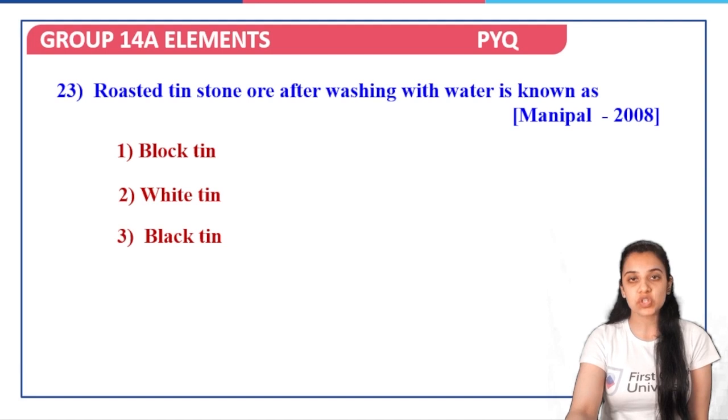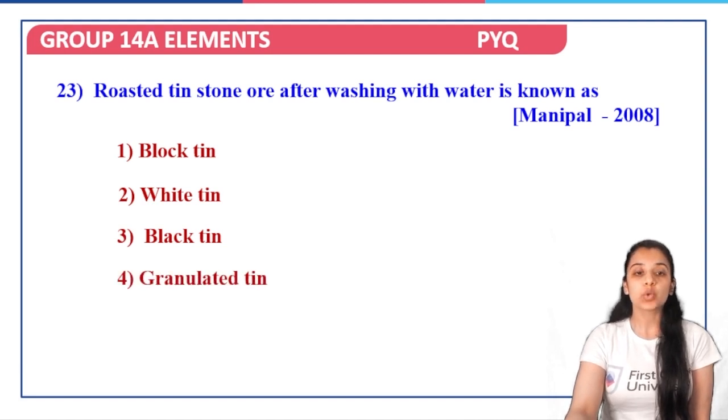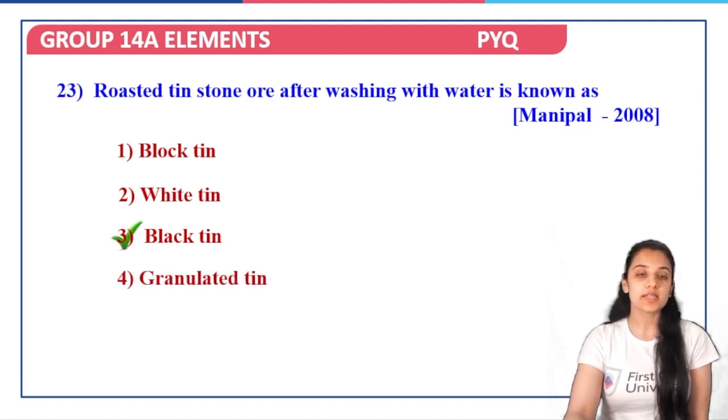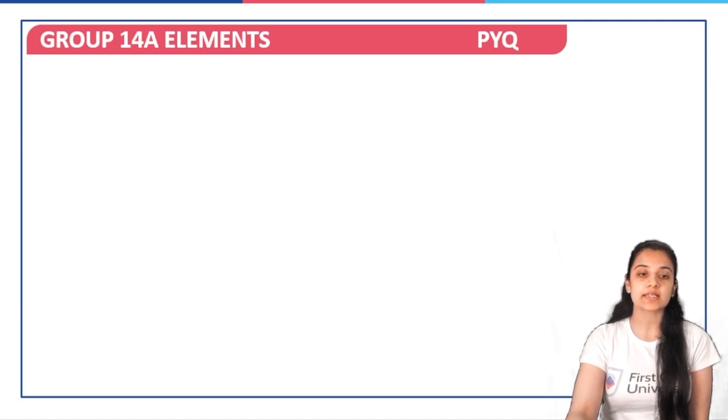Next: roasted tin stone ore after washing with water is known as what? This is an important question — note it down. It is called black tin. Option three is the correct answer.